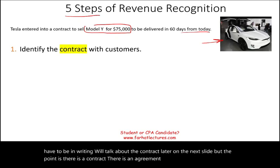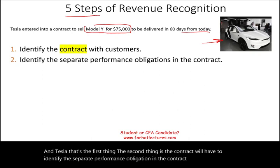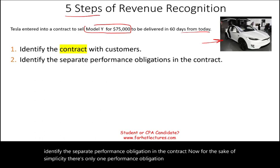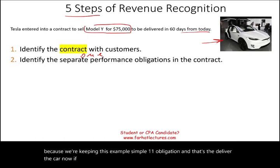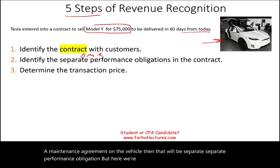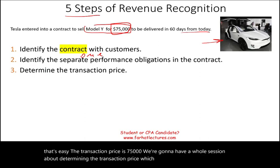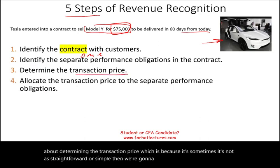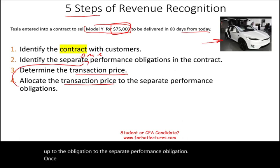Step two is to identify the separate performance obligations in the contract. For simplicity, there is only one: Tesla has to deliver the car to the customer. If Tesla also wanted to sell a maintenance agreement, that would be a separate performance obligation — but here we assume just one. Step three is to determine the transaction price, which is easy here: $75,000. Step four is to allocate the price to the performance obligation — again simple with one price and one obligation.